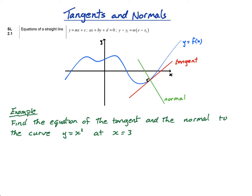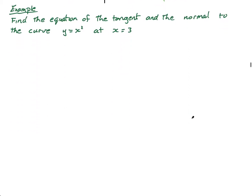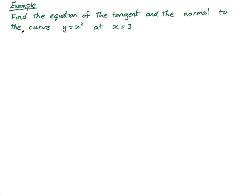Now we're going to find the equation of both. To find the equation of a line, I've given the straight line equations here in section 2.1. The formula I'm going to focus on is y minus y1 equals m into x minus x1. You just find the gradient and a point and then sub it into the formula. So we need a point, a gradient, and the formula.